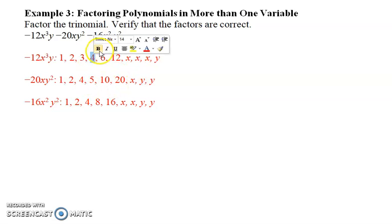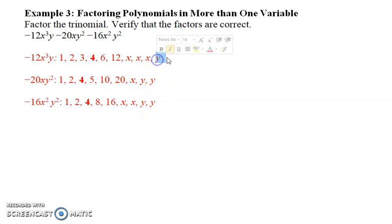Now you're going to list the GCF of each. So they all have a 4, so the greatest common factor is going to be 4. And then what common variables do they have? They all have 1x, so we'll take an x. And they all have 1y, so we'll take a y. So the GCF is going to be 4xy.